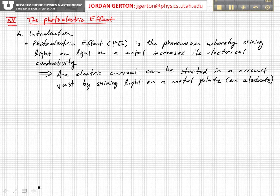The photoelectric effect is, in general, just the phenomenon whereby if light is shined on a piece of metal, then electrons or charges can be ejected from that metal. In particular, if that piece of metal is part of a circuit — one of the electrodes, a metal plate that's part of an electric circuit — then shining light on one of the electrodes can actually cause an electric current in the circuit, even without a traditional battery or voltage driving the current.